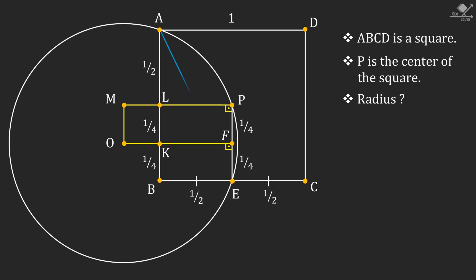Now let's connect point A and point E. So we have created a right-angled triangle ABE, and we can use Pythagorean theorem on this triangle to find the length of line segment AE.